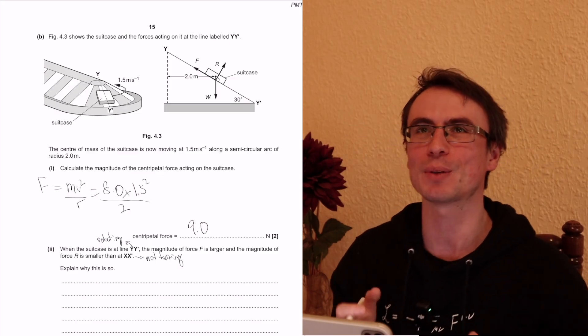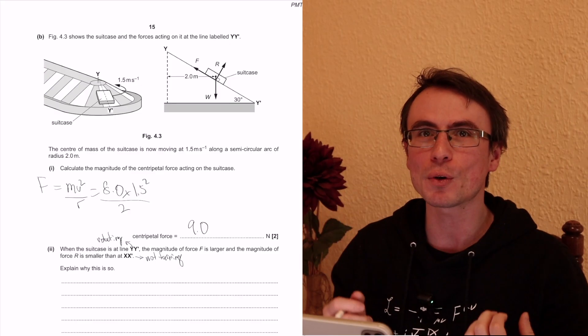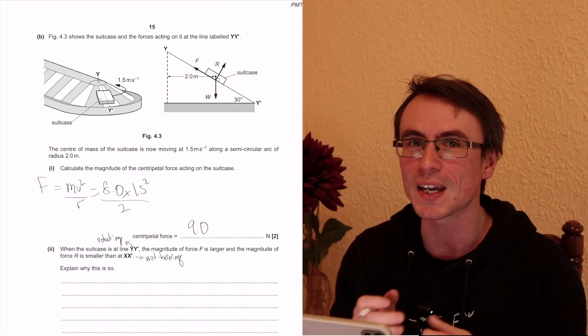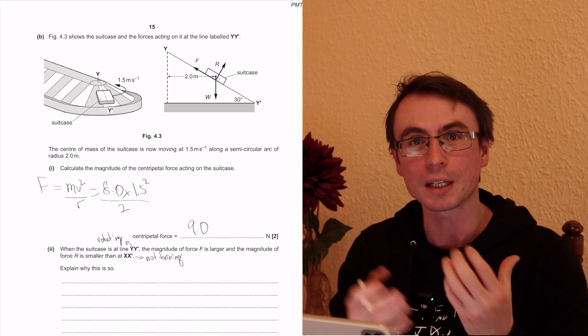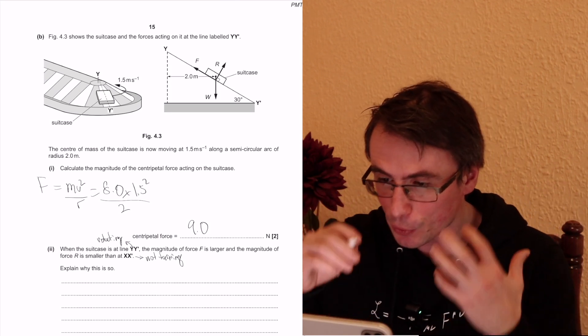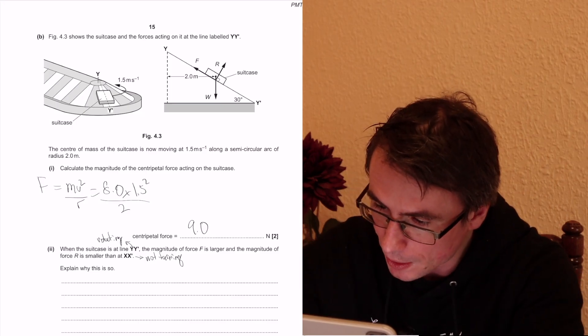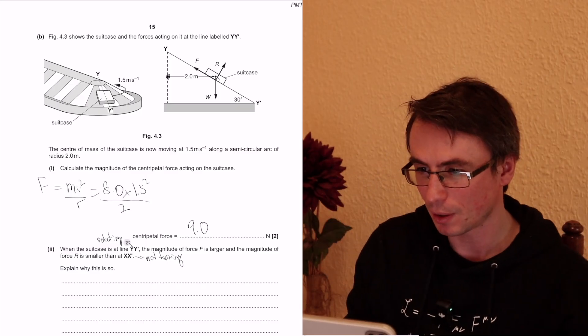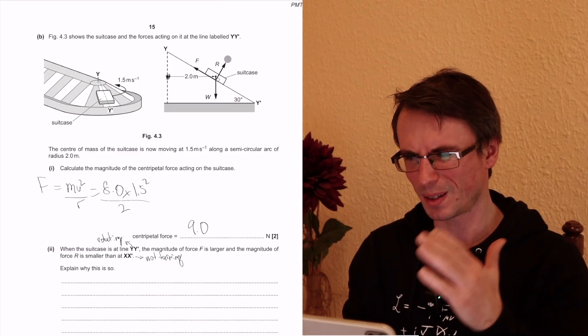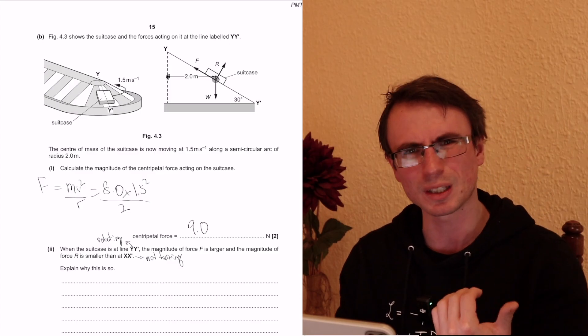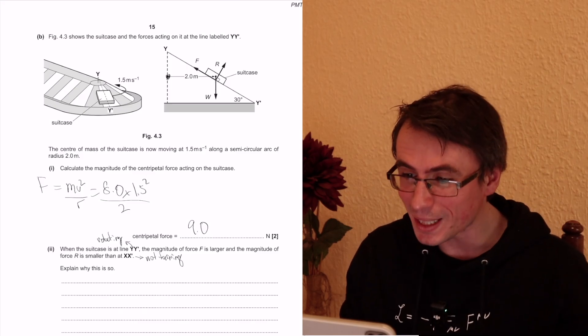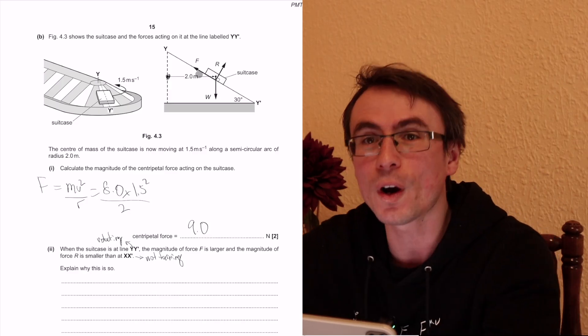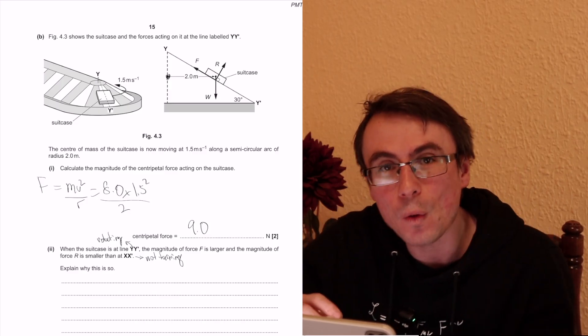Now I really like this question because it showcases that the centripetal force is not just a random force that appears when something is turning. It's provided by a component of one of the forces that is already present. So in this case the radius of the turning is somewhere here. So we need a force which has a component to the left. Well, R is pointing up and to the right, can't be R. W is pointing straight downwards, it's not going to make it turn. However, F is pointing up and to the left. Therefore the frictional force is the only force that can make it turn. If this conveyor belt was made out of something low friction like ice, it's not going to turn.